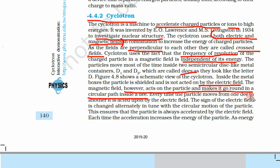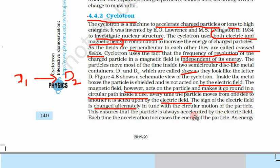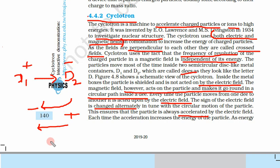Every time the particle moves from one D to another, it is acted upon by the electric field. The sign of the electric field changes alternatively in tune with the circular motion — as soon as the particle reaches the end of the D, the sign changes. This ensures the particle is always accelerated by the electric field. When it is accelerated, its velocity increases, and since velocity increases, kinetic energy increases.